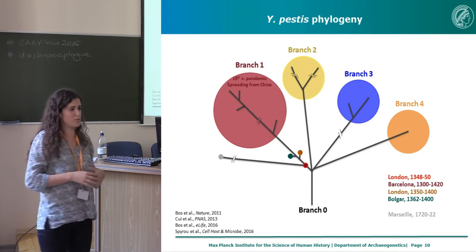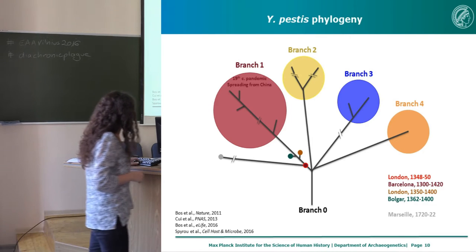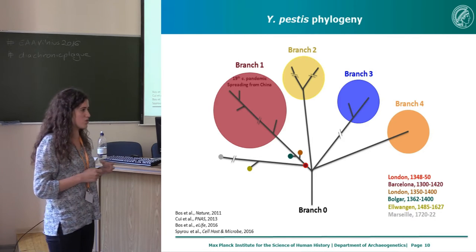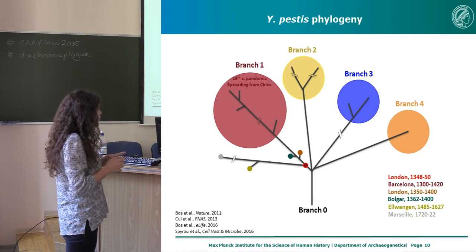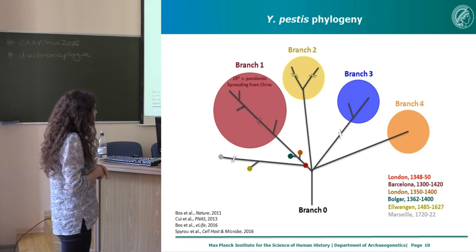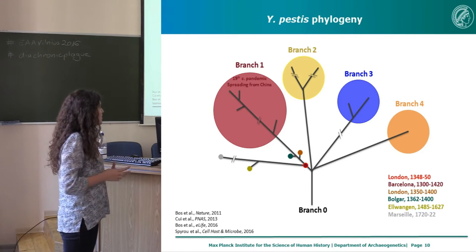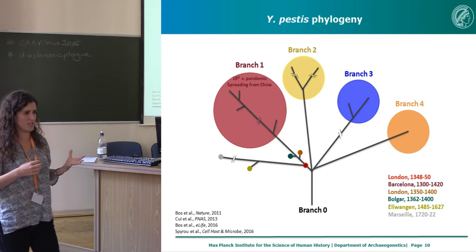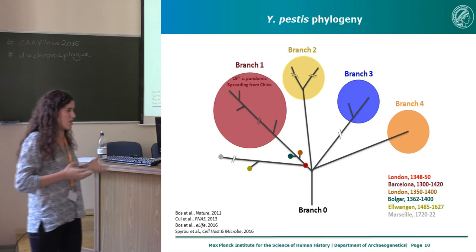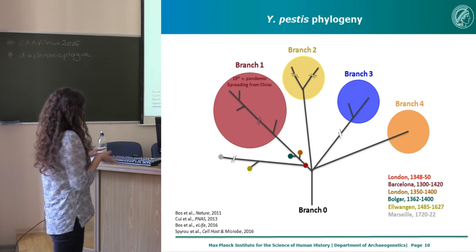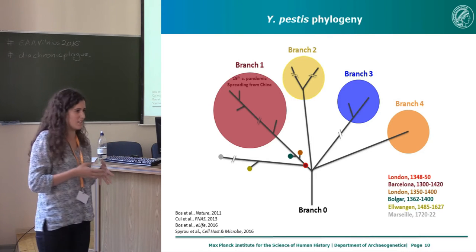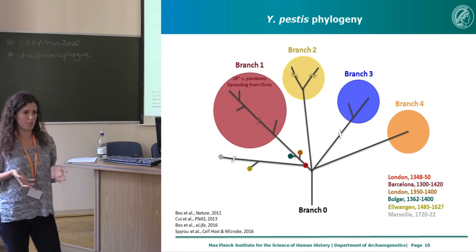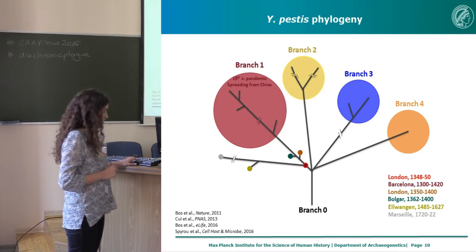This lineage eventually diverged further and may have caused the third plague pandemic later in the 19th century. Our plague strain from Ellbangen falls on the same branch as the Plague of Marseille strain, suggesting further that there is a link between the Black Death and these post-Black Death outbreaks found in Europe — likely because all of these strains share a genetic history dating back to the Black Death event, suggesting there may have been a focus of plague that remained in Europe until the 18th century when plague essentially disappeared from the continent.